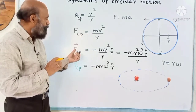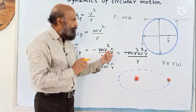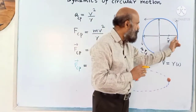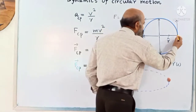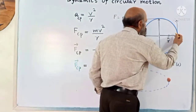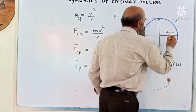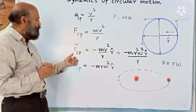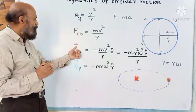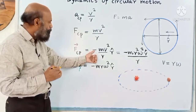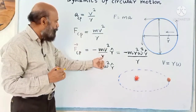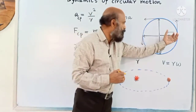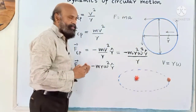Force is a vector quantity. Here R̂ is a unit vector directed away from the center, but centripetal force is directed towards the center, so we use minus R̂. We can write centripetal force in vector notation as −MV²/R · R̂, indicating it is directed towards the center.